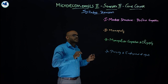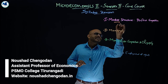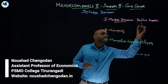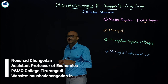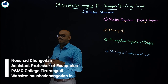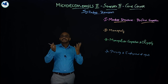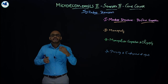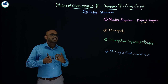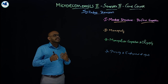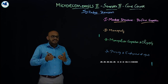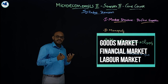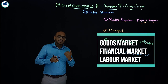The first module is market structure. Here we will discuss perfect competition, and we need to understand what a market is. From the macroeconomics point of view, you can see goods market, financial market, and labor market. We will also discuss the IS-LM model.